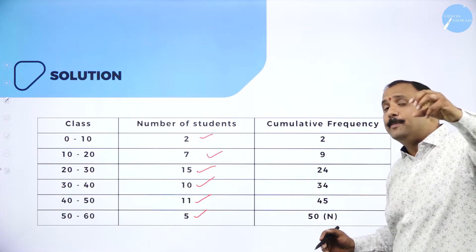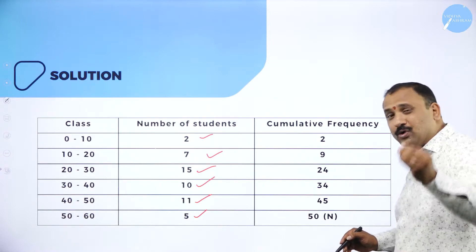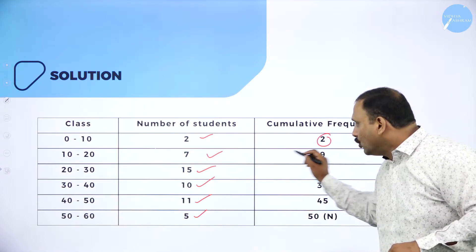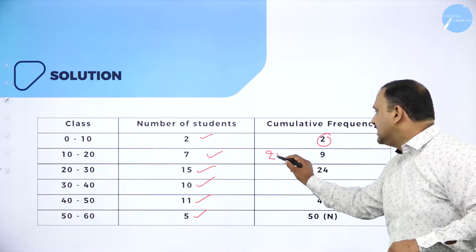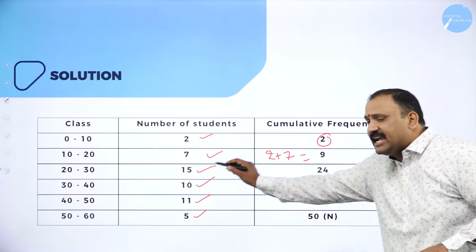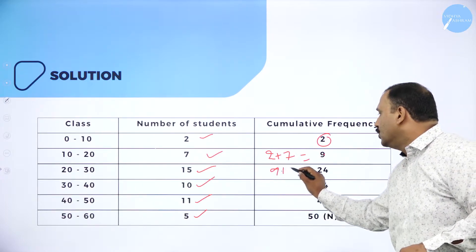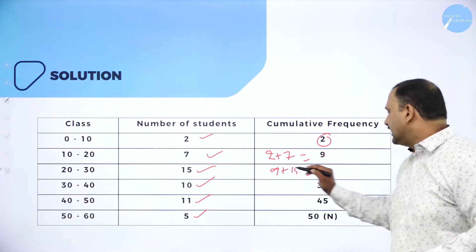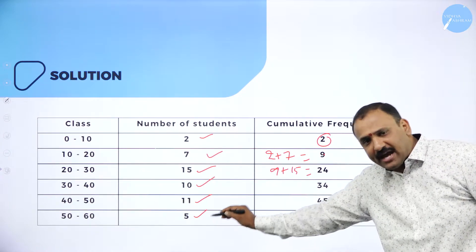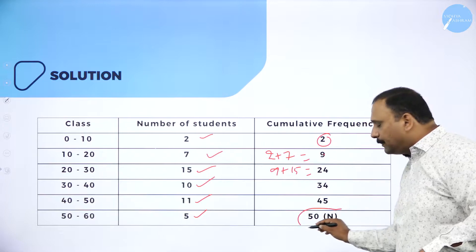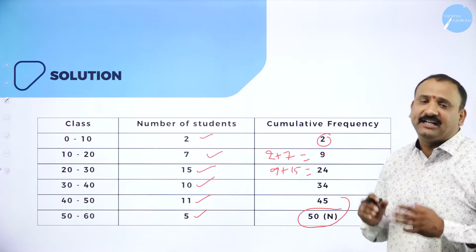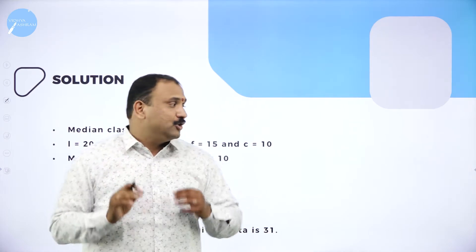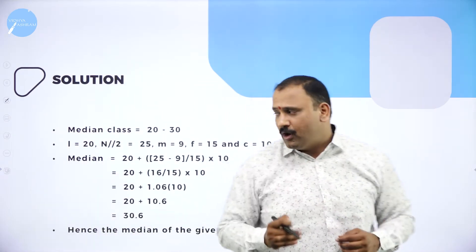Now we calculate the cumulative frequency. We start with 2, then 2+7=9, then 9+15=24, then 24+10=34, then 34+11=45, and finally 45+5=50. So the cumulative frequency n is equal to 50. Please make a note of this — it is very important moving forward.